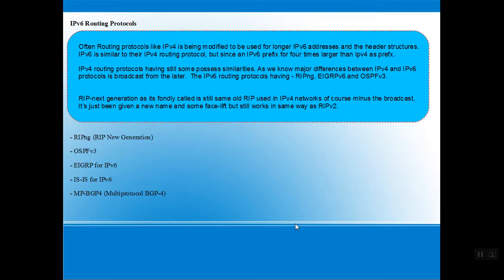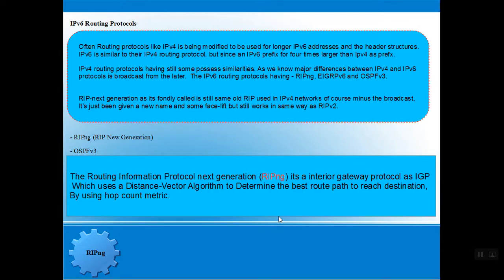First, we start with RIPng — Routing Information Protocol Next Generation. RIPng is a distance vector algorithm used to find the best route or path to reach a destination. It is an interior gateway protocol which uses a distance vector algorithm to reach the destination.